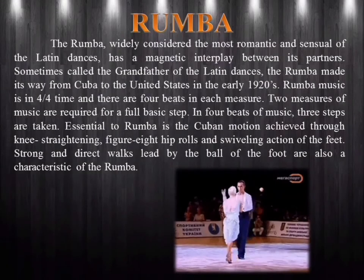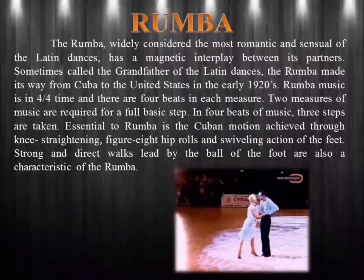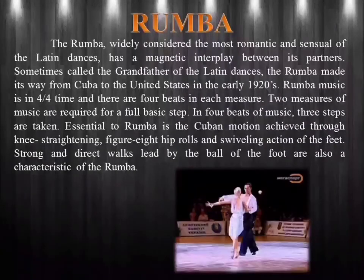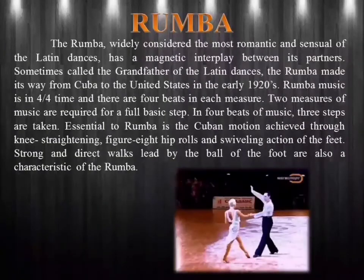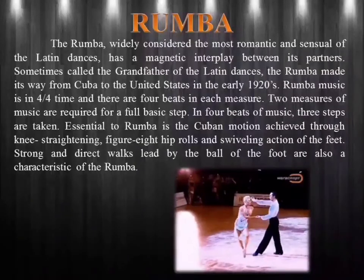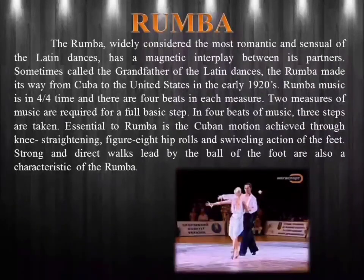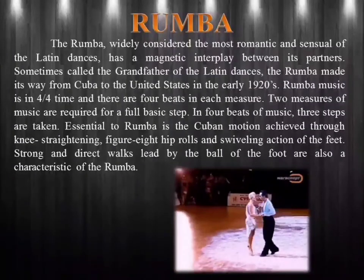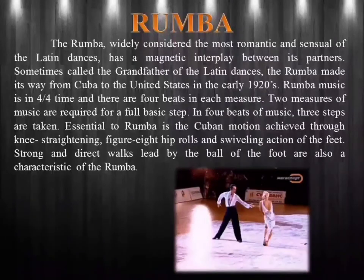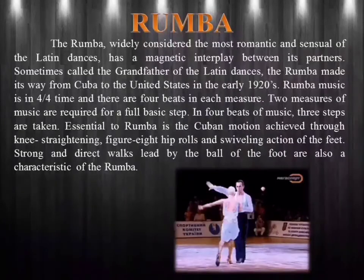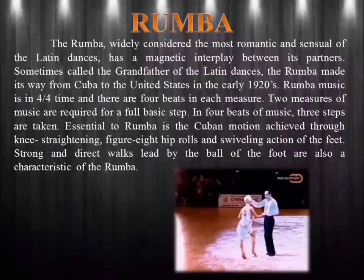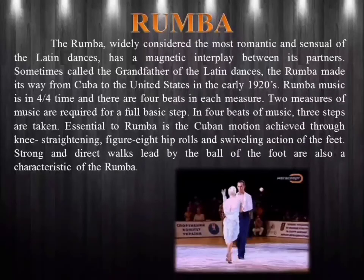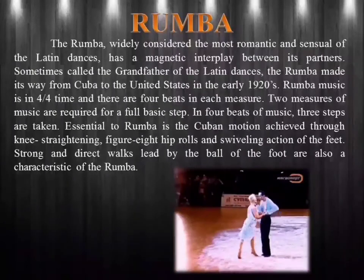Rumba. The rumba, widely considered the most romantic and sensual of the Latin dances, has a magnetic interplay between its partners. Sometimes called the grandfather of the Latin dances, the rumba made its way from Cuba to the United States in the early 1920s. Rumba music is in four-four time and there are four beats in each measure. Two measures of music are required for a full basic step. In four beats of music, three steps are taken. Essential to rumba is the Cuban motion achieved through knee-straightening, figure-eight hip rolls, and swiveling action of the feet.